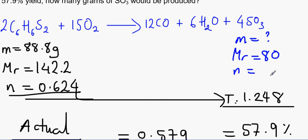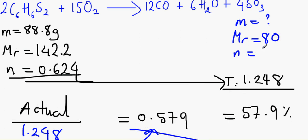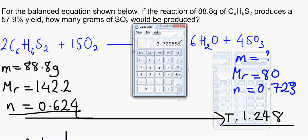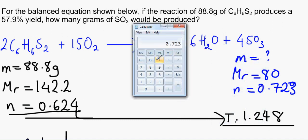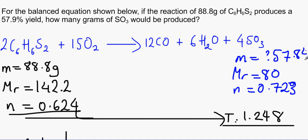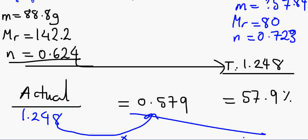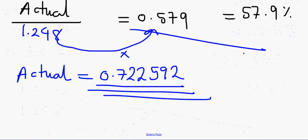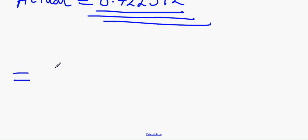So we can write it here, 0.723. And we can work out the mass by doing number of moles times the molecular mass. So that is 0.723 times 80, and that would give us 57.84. Now if we round that up, that would give us 57.9 grams. And that is our answer.